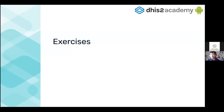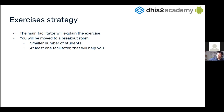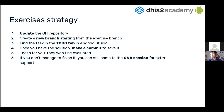Before we start with the exercises, I'm going to talk a little bit about how we are going to do this. The strategy we're going to follow is that we will have a main facilitator per exercise — in this case, I will be the main facilitator of the first one. The main facilitator will explain the exercise and then you will be moved to a breakout room with a smaller number of students and at least one facilitator to help you solve the exercise. The first thing we have to do is update your Git repository to make sure we have the latest version downloaded from GitHub.